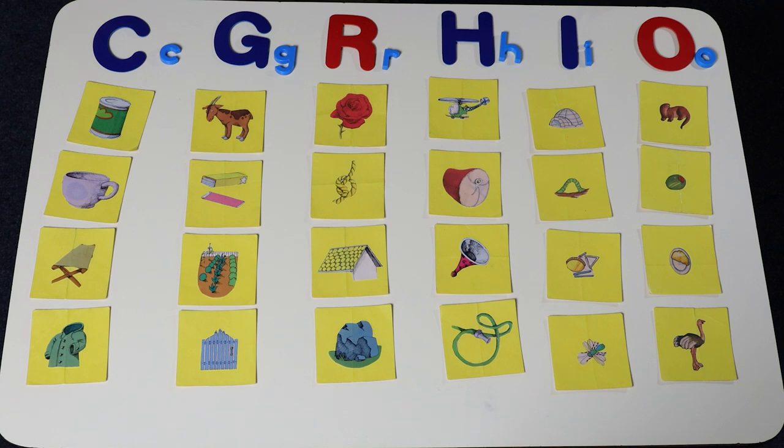Let's review. The name of this letter is C. The sound it makes is C, C, C. Can, C, cup, C, cot, C, coat.